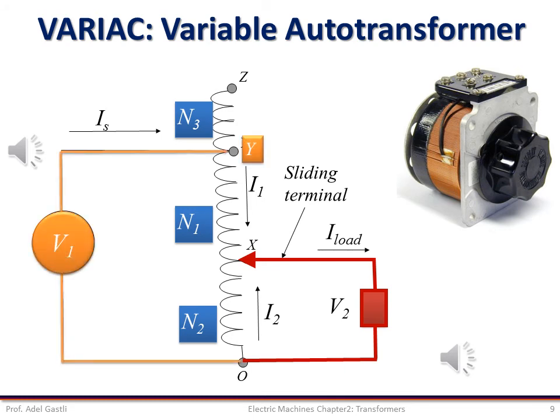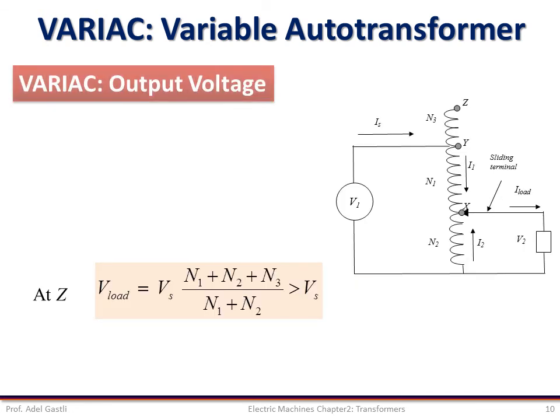On the other hand, the input voltage is tapped at point Y, which gives a fixed primary winding number of turns equal to N1 plus N2. So, the secondary can tap at any point X of the winding between O and Z. Now let us determine the VARIAC output voltage for different operating scenarios.